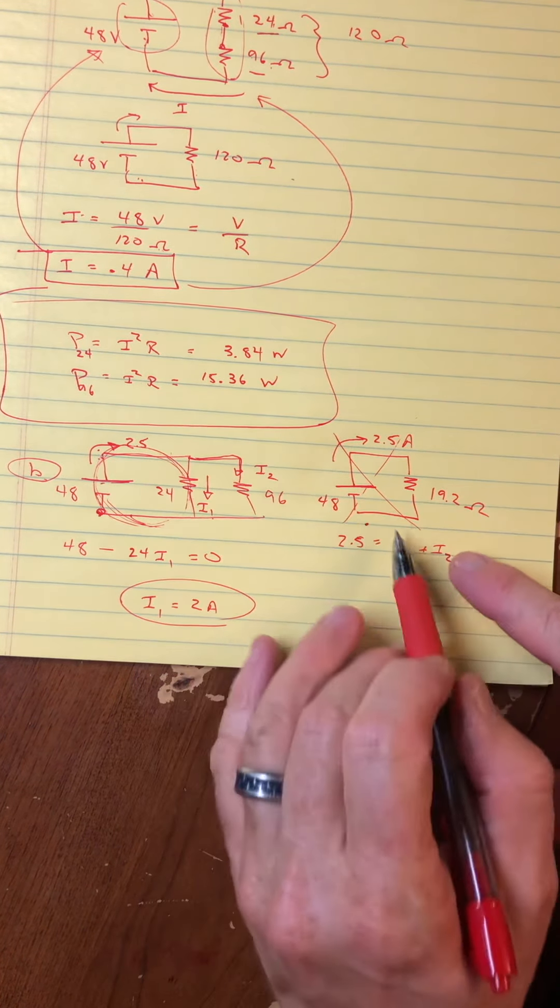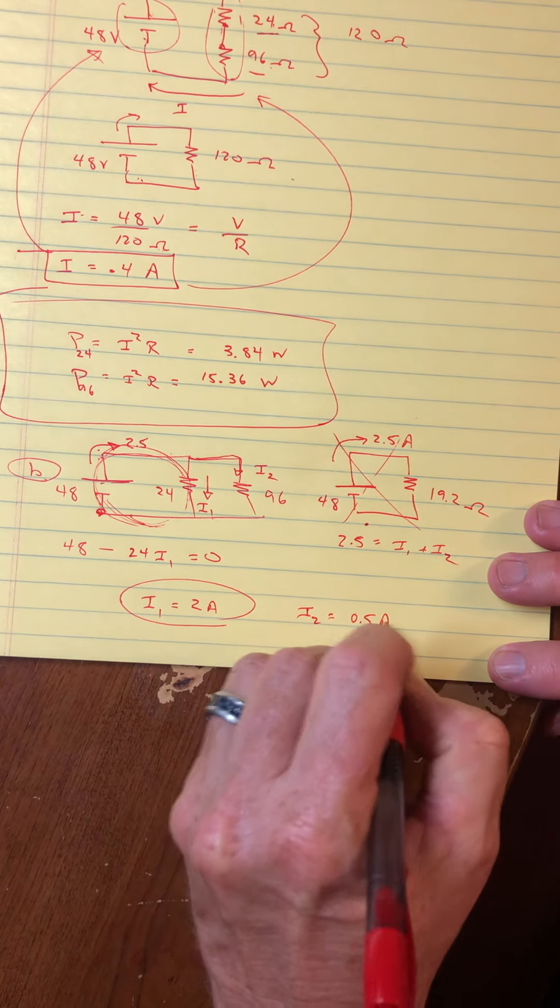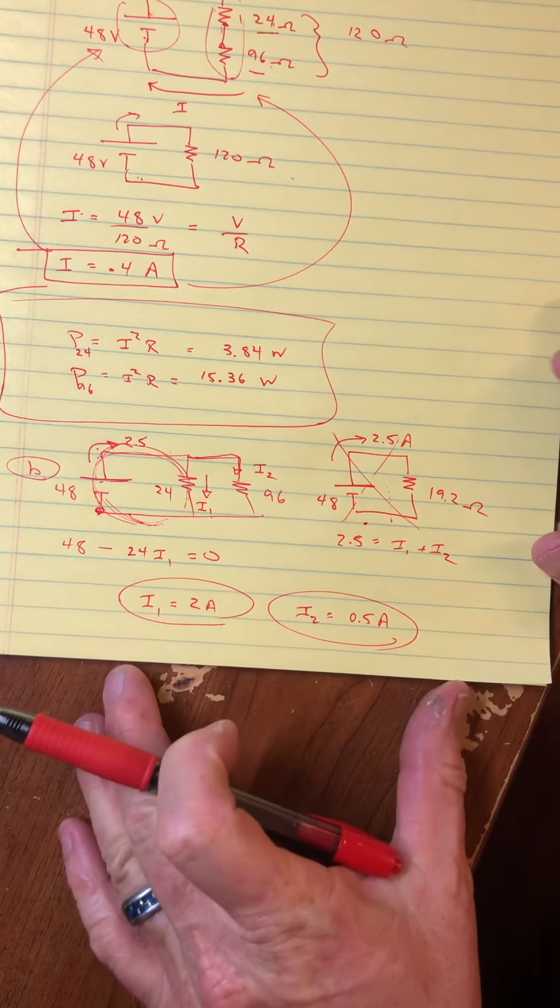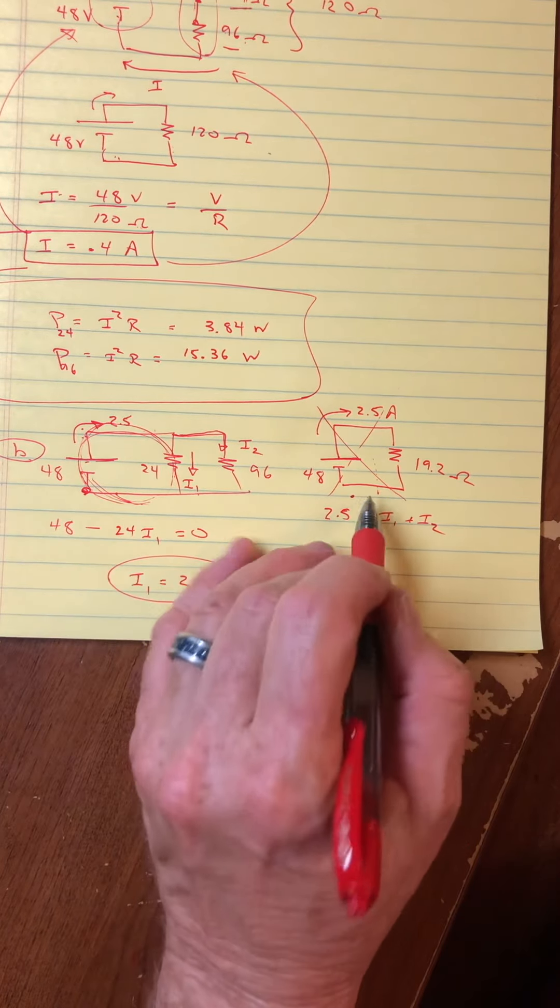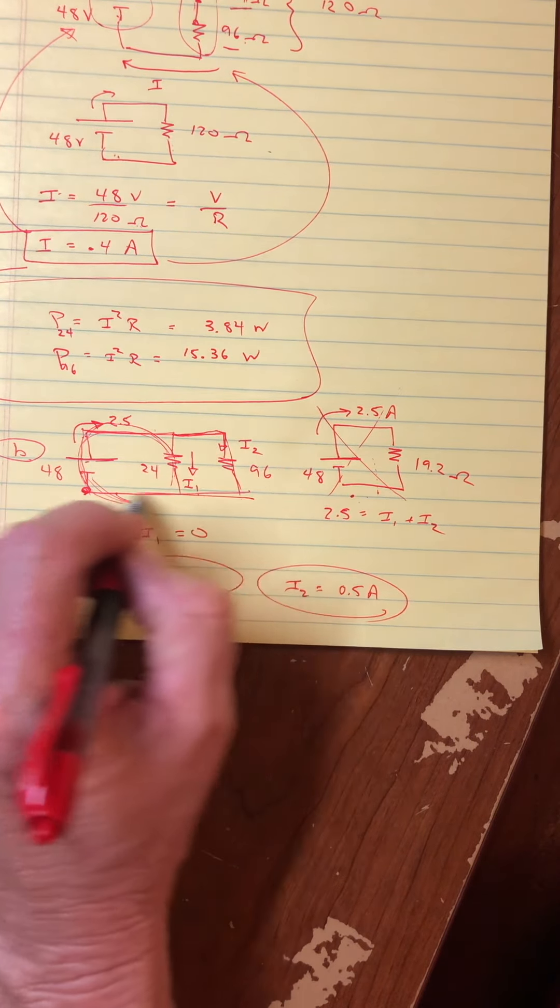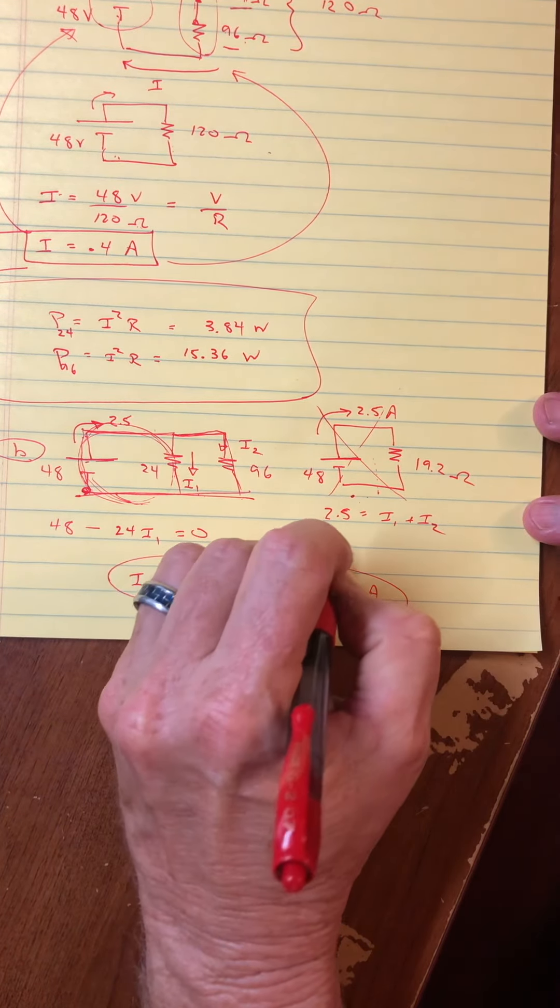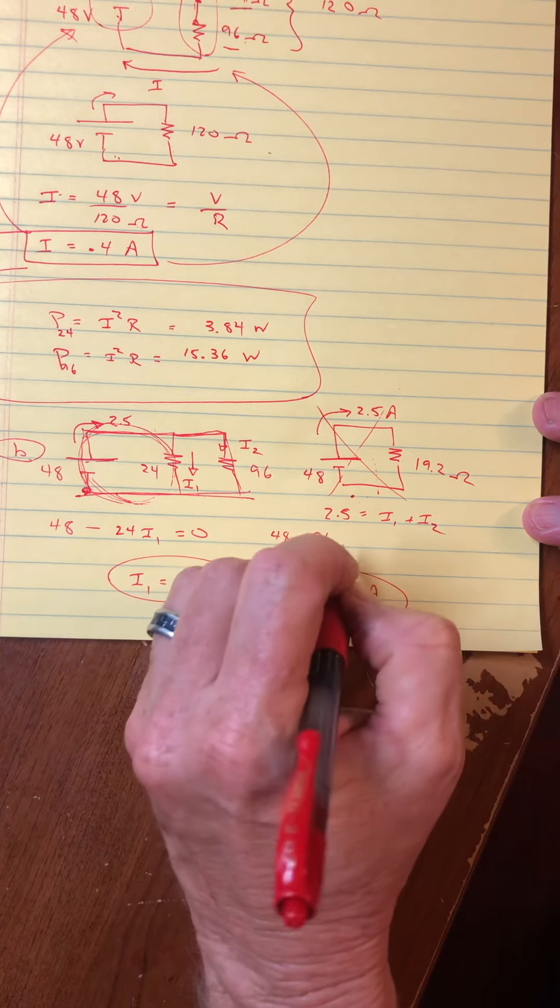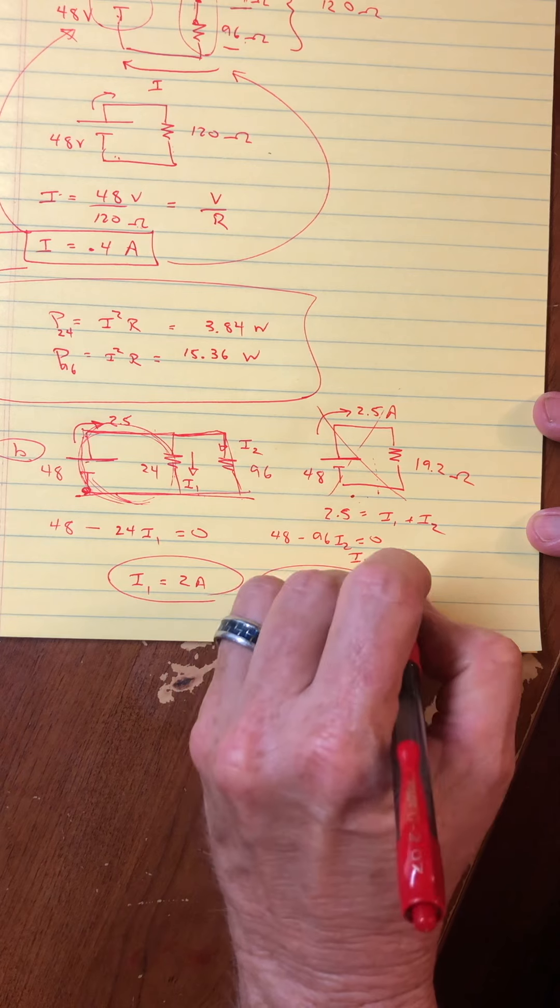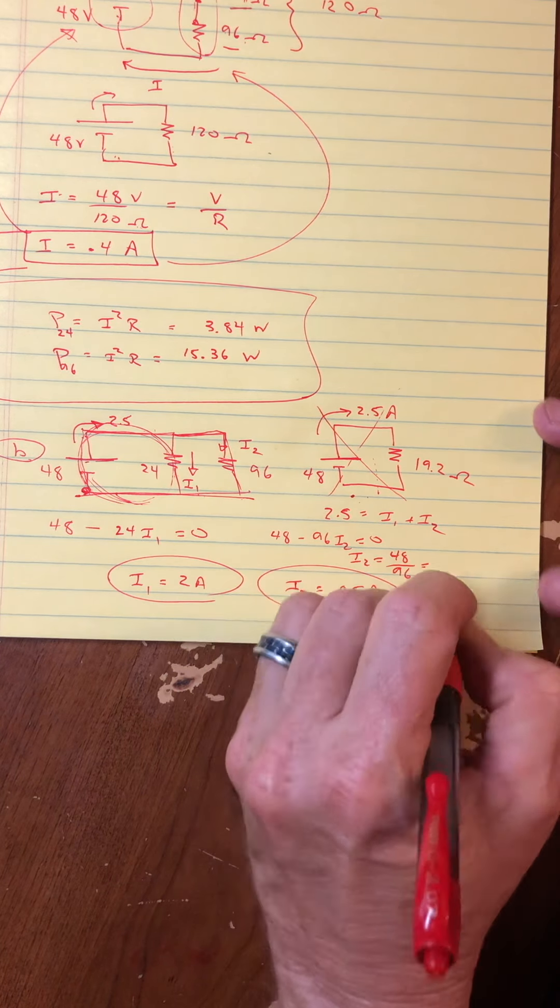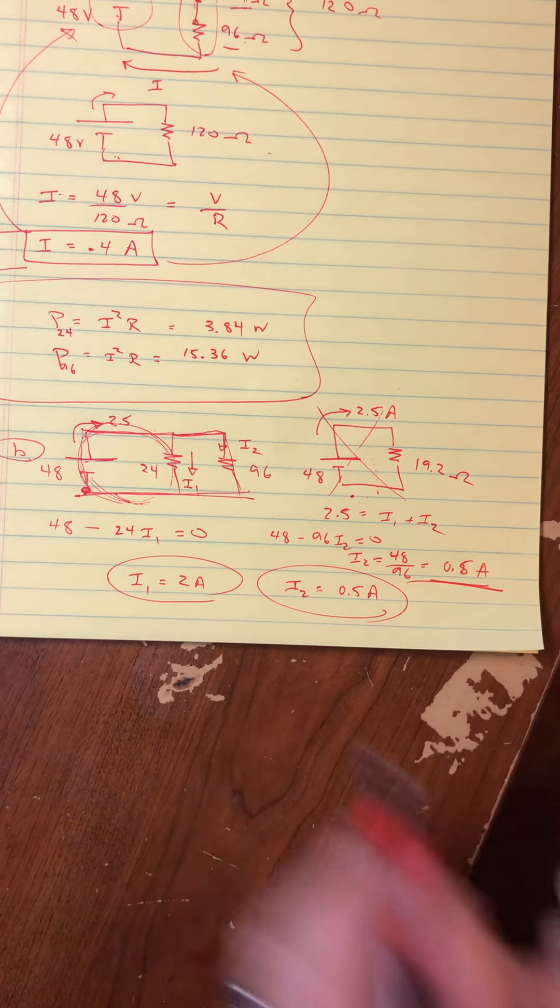And in fact, now that we've actually done the equivalent, that would tell me that number two would have to be a half an amp because we did do the equivalent, even though I said it wouldn't be useful. I guess right now it is useful. But I would say instead of doing the equivalent, just do the whole big loop here, because then you would get 48 minus 96, I2 equals zero. And then I2 would be 48 over 96, which of course is one half. So of course you get the same thing.